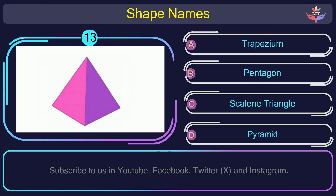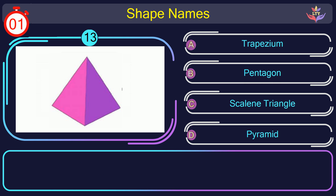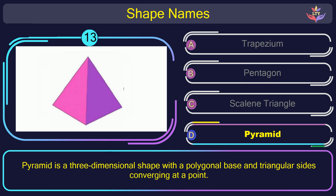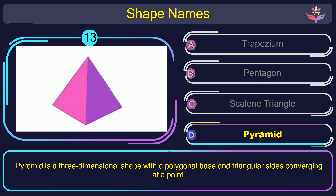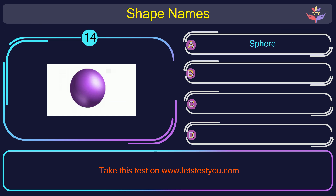Question number 13. Find the name of the shape in this picture. The correct answer is option D. Pyramid. Pyramid is a three-dimensional shape with a polygonal base and triangular sides converging at a point.